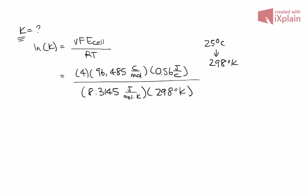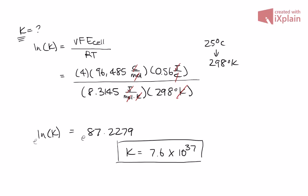K is a dimensionless unit, the equilibrium constant. Let's make sure that all of our units cancel. Your Kelvin cancels, moles cancel, coulombs cancel, and joules cancel. Perfect. After we calculate this all out, ln K, don't forget the natural log here, is equal to 87.2279. Go ahead and take E of both sides, and K is going to be equal to 7.6 times 10 to the 37th. No units. Thank you.